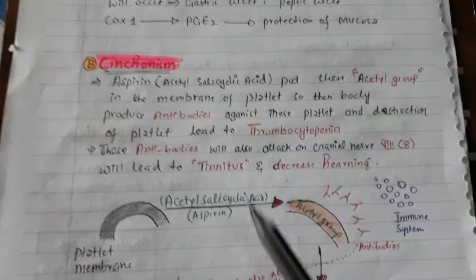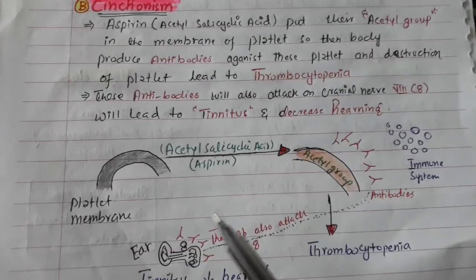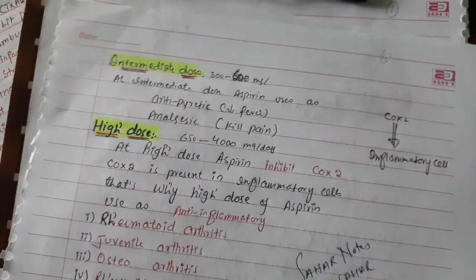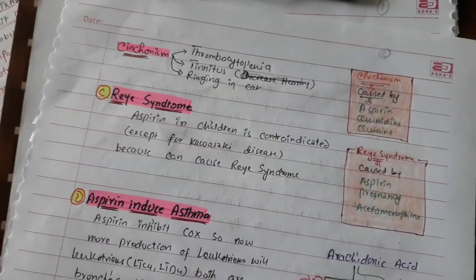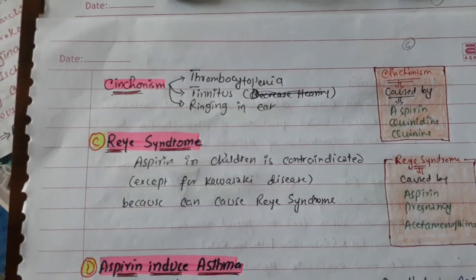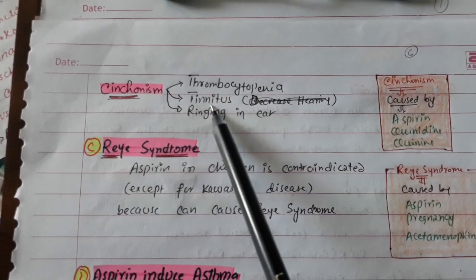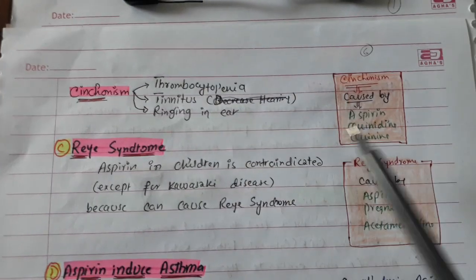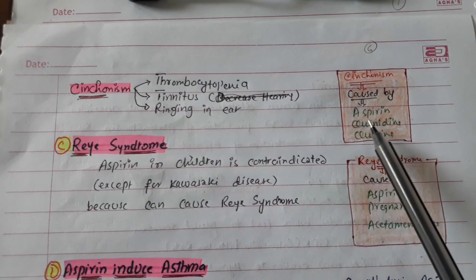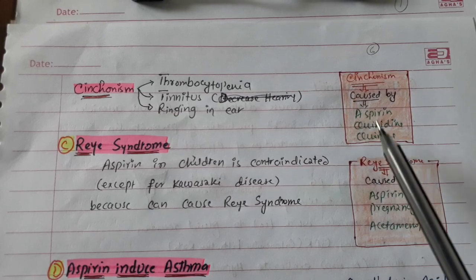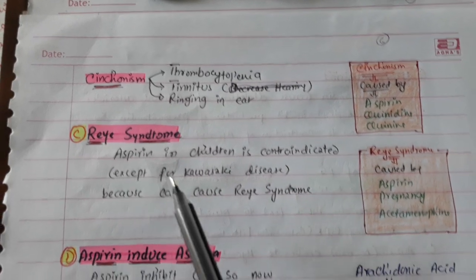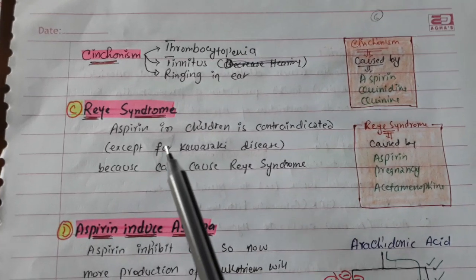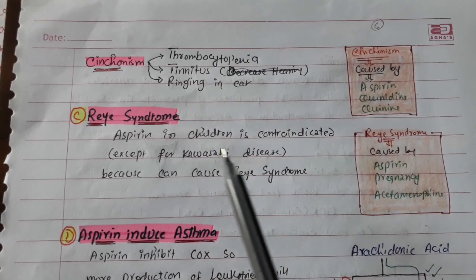The antibody attack on the eighth cranial nerve leads to tinnitus (ringing in the ear) and decreased hearing. Thrombocytopenia, tinnitus, and decreased hearing together are called synchronism. Synchronism can also be caused by quinidine and quinine.